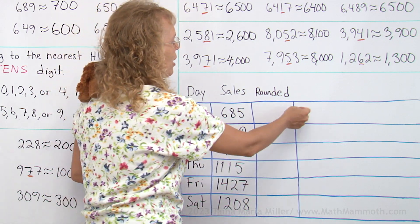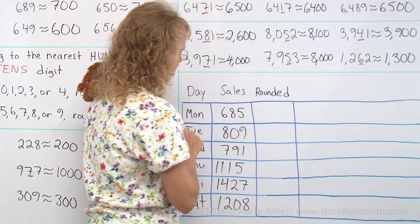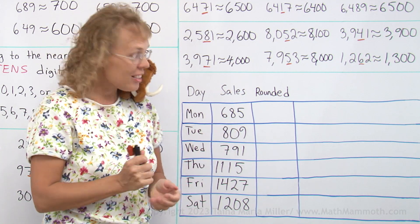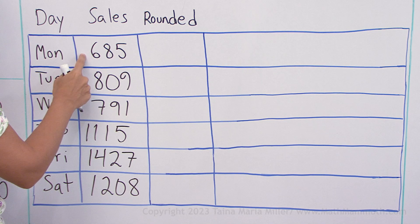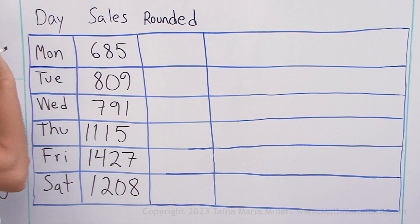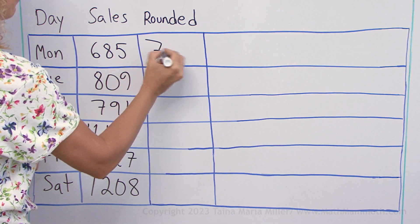And we want to make a pictograph here. But for that, we will first round the numbers to the nearest hundred. So this one, 685, what would you say? Round it to 700.